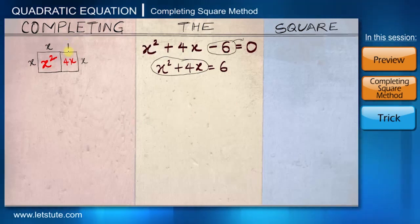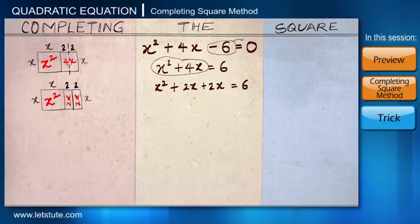So what I am going to do is split this rectangle with an area of 4x vertically. And what I am going to get is equal rectangles with length x and breadth 2. So in my equation what I will write is x² + 2x + 2x. Because if you notice, I did not touch the length x. Instead, I split the breadth 4 and I got 2 rectangles with breadth 2 and 2.